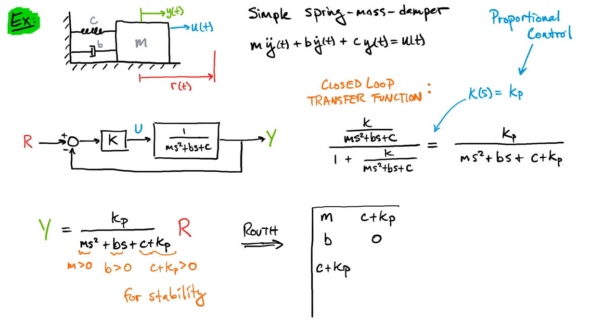So we'll take a look at a simple example, again leveraging that same spring-mass-damper example. We already went from the ODE to the block diagram and the block diagram to the closed-loop transfer function. Remember, this is the open-loop transfer function, and then this is the closed-loop transfer function. Now we're going to specify a particular controller.